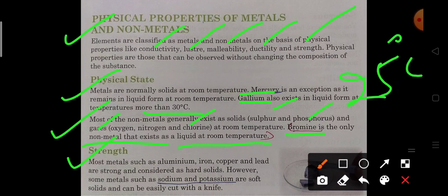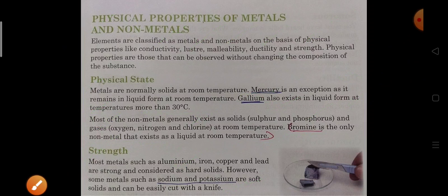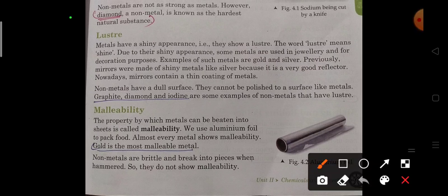About strength: Most metals such as aluminium, iron, copper, lead are strong and considered as hard solids. But exception is also there - sodium and potassium are so soft that they can be cut easily through a knife. Non-metals are not as strong as metals. Exception is diamond, the non-metal which is the hardest natural substance.